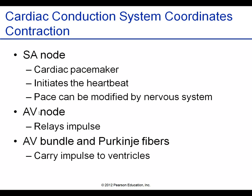Once the impulse passes through the AV node, it rapidly stimulates both ventricles simultaneously through the AV bundle, bundle branches, and Purkinje fibers, causing the ventricles to contract and eject blood into the pulmonary artery and the aorta — right and left, respectively.